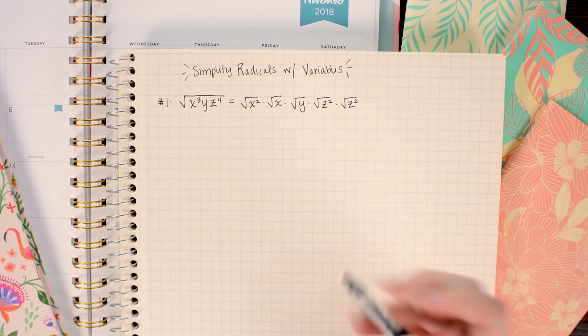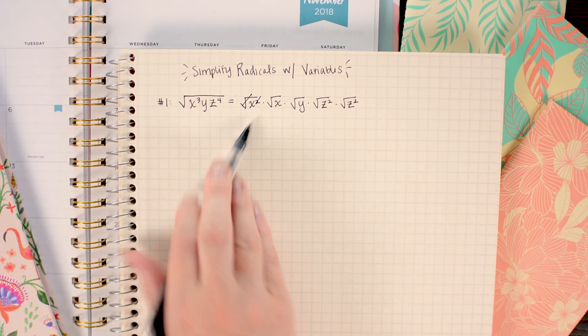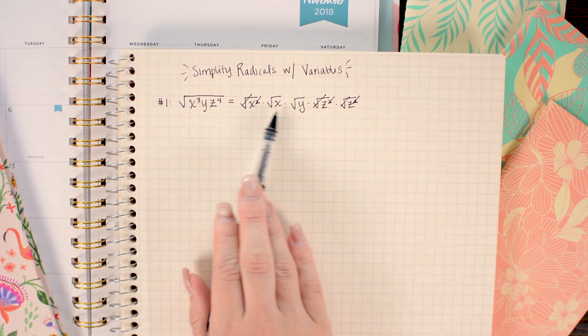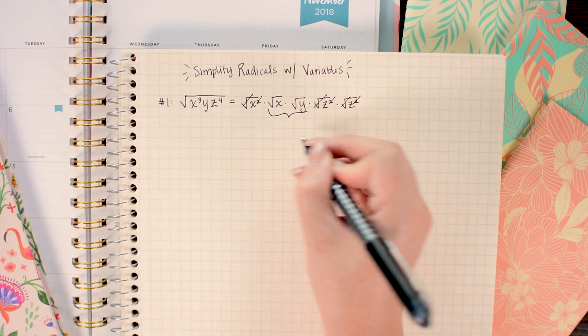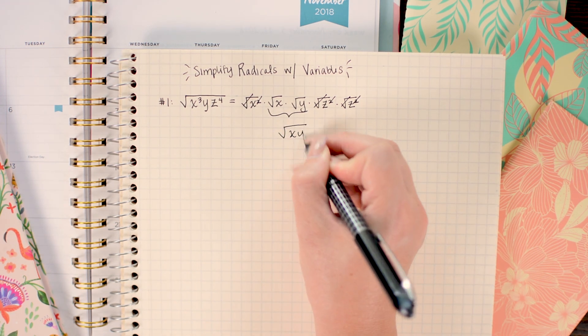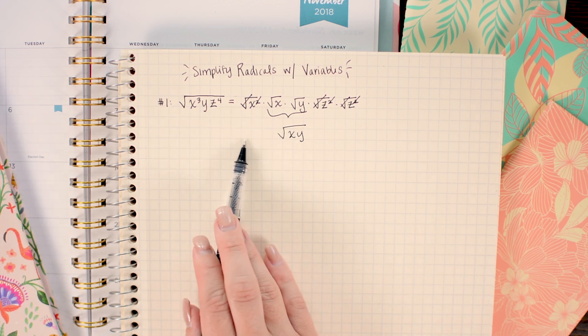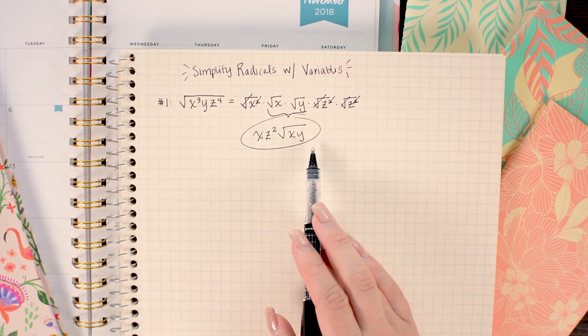Now I'm just gonna go ahead and just cancel out anything that reduces. So the square root and the squares reduce. And so now all I have left under the square roots is the x and y. So I want to put those back together into one root and then I want to take everything that is no longer any root and write it in front. So that technique worked really well with this problem.